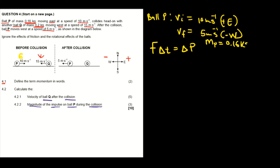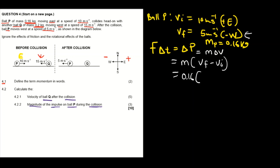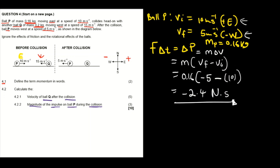We substitute the given information. The mass of ball P is 0.16 kg. The impulse equals mass times (v final − v initial): 0.16 × (−5 − 10). The final velocity is negative 5 m/s (west) and the initial is positive 10 m/s. Computing: 0.16 × (−15) = −2.4 Newton-seconds. So the impulse of ball P is −2.4 N·s.